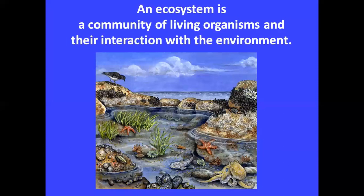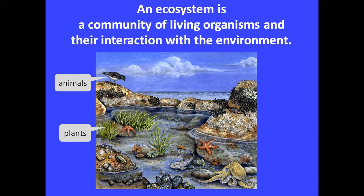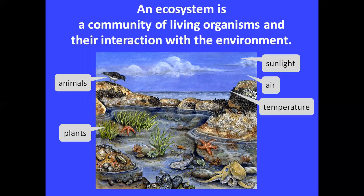An ecosystem is a community of living organisms and their interaction with the environment. The living organisms are plants and animals, and the non-living components are sunlight, air, temperature, water, salt, and sand and soil.